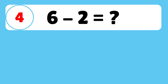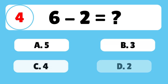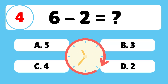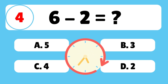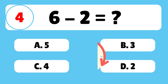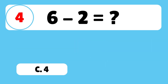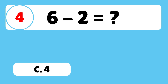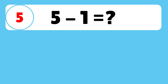Question 4: What is 6 minus 2? The answer is C. 6 minus 2 is equal to 4.